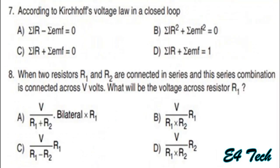According to Kirchhoff's voltage law, in a closed loop, the algebraic sum of potential drops and EMF in a circuit is zero. That is, the summation of IR plus summation of EMF is equal to zero. Option C.